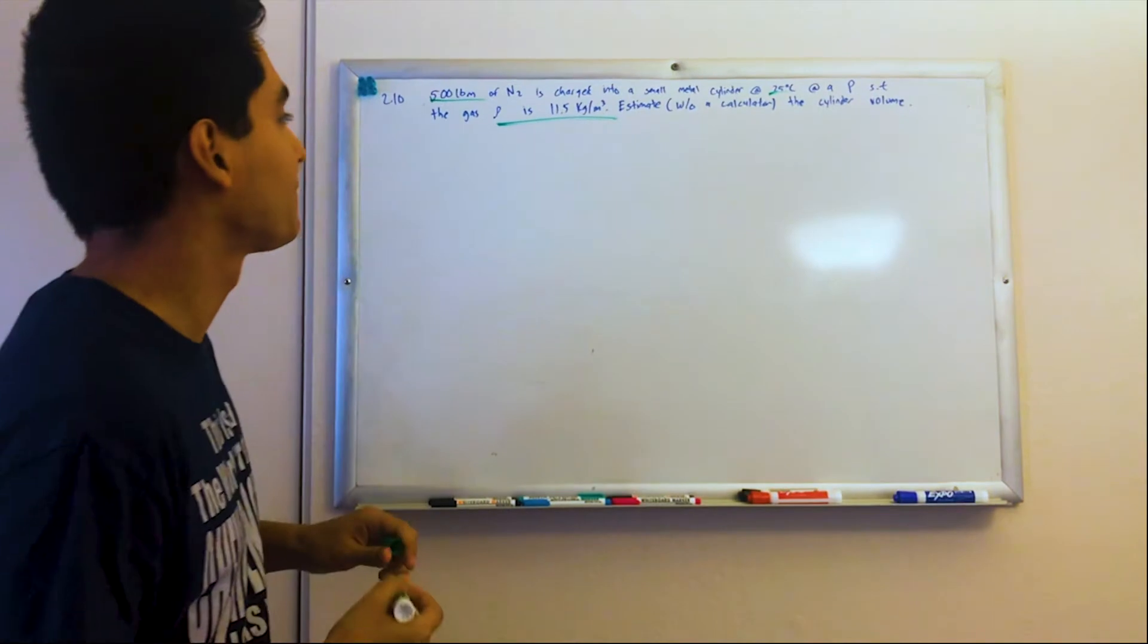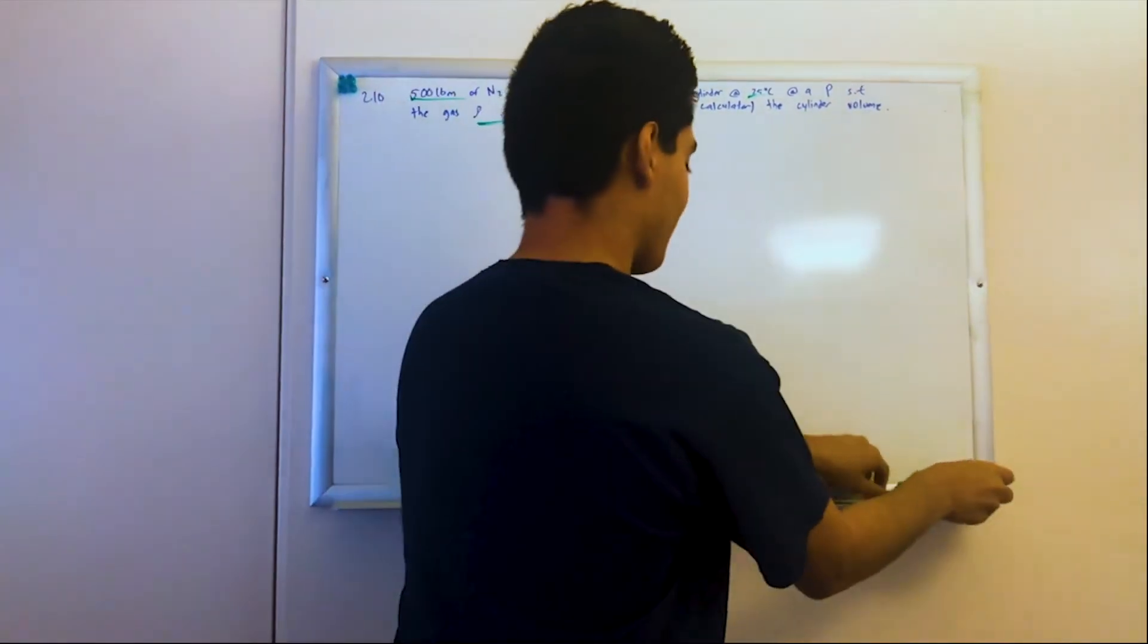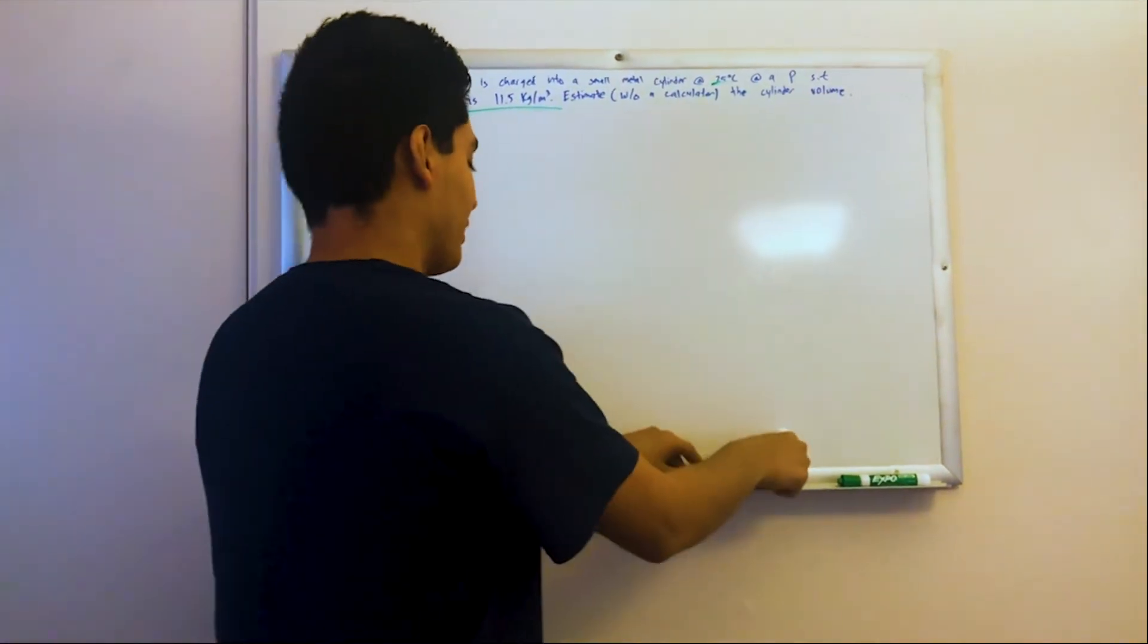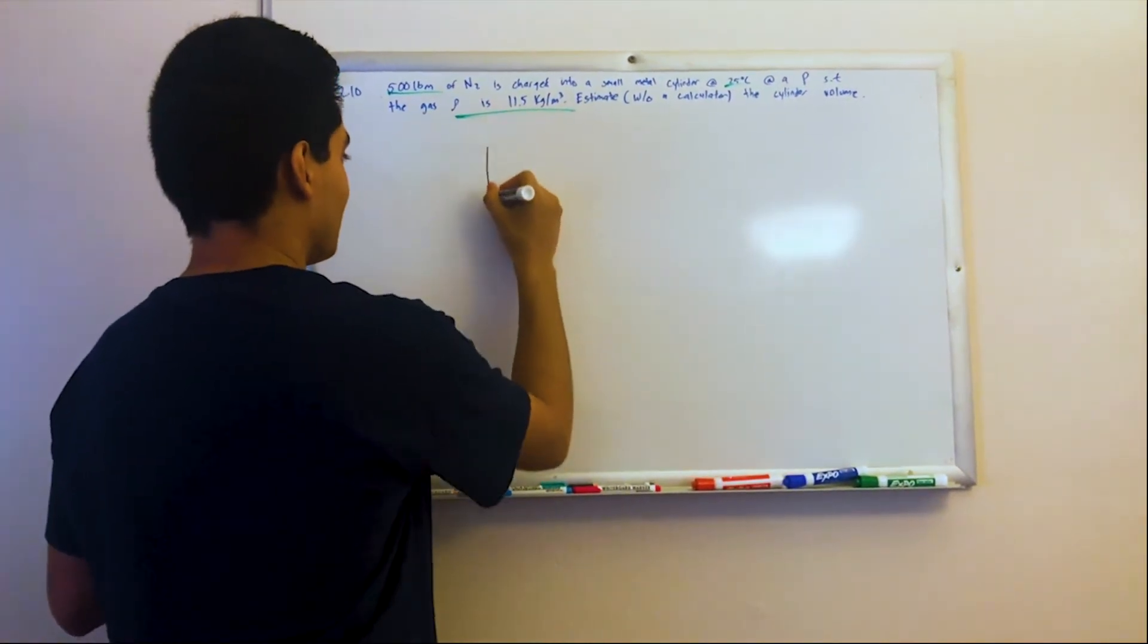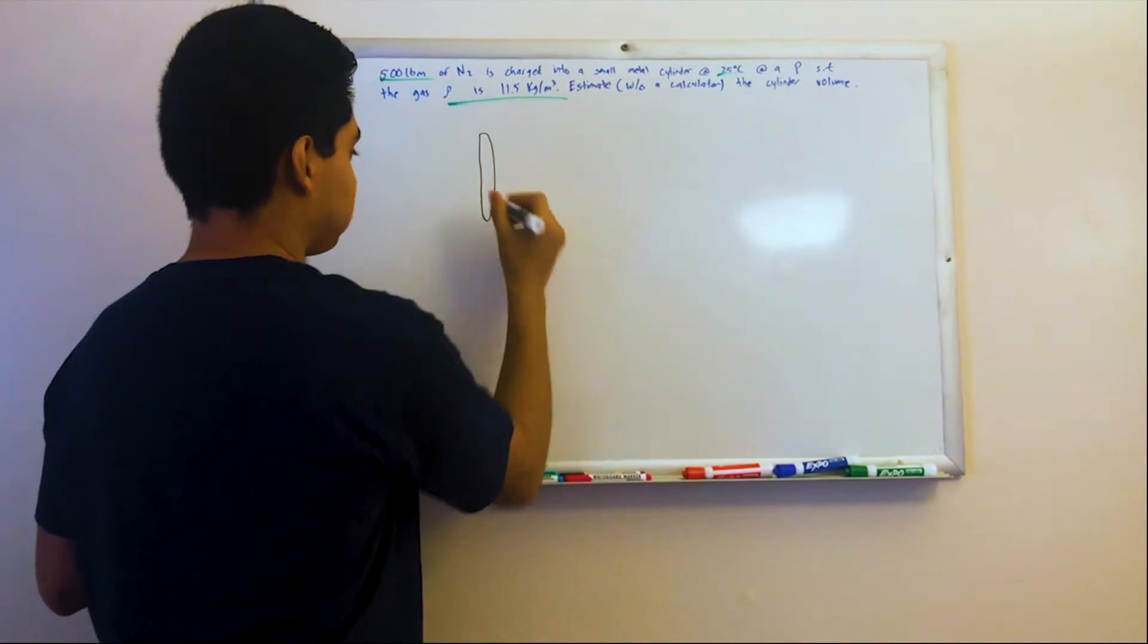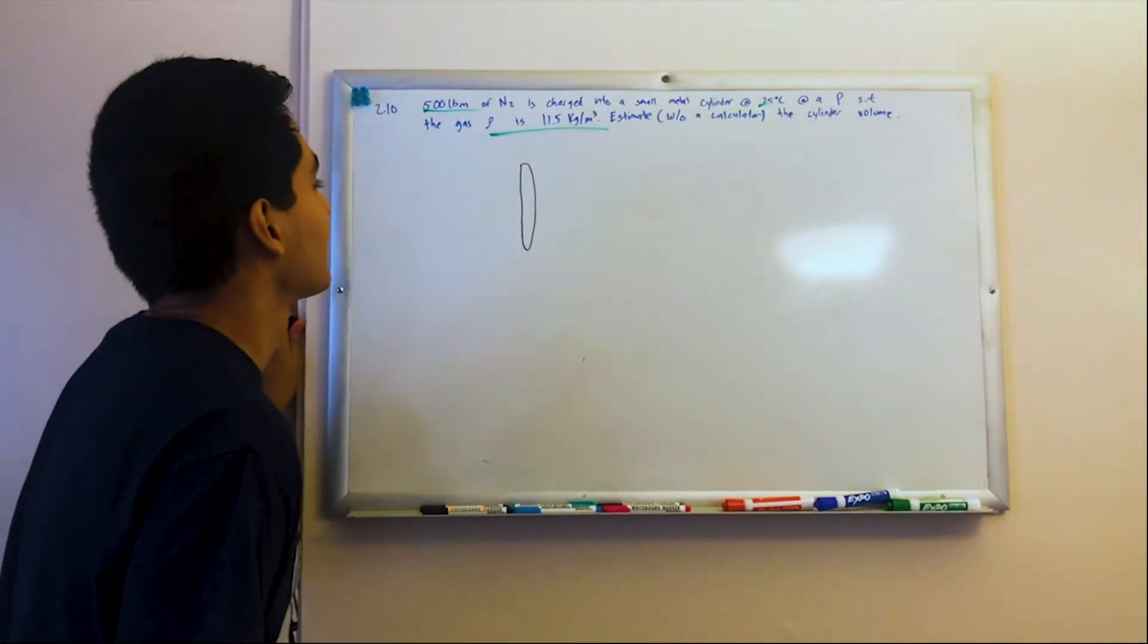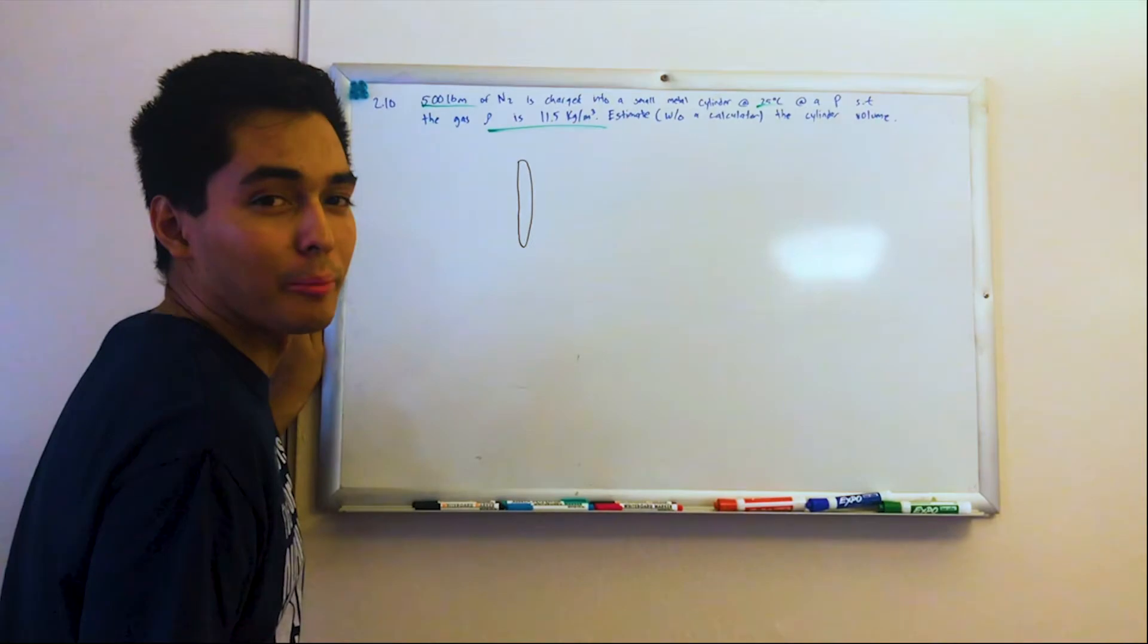Alright, so how are we going to do this? I'm a very visual person, so let's just draw a little picture. Here we go. Okay, so that's my attempt at a cylinder. Do me a favor and stop booing.